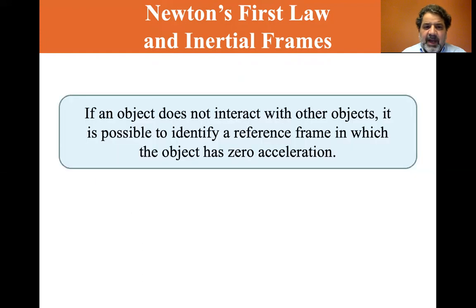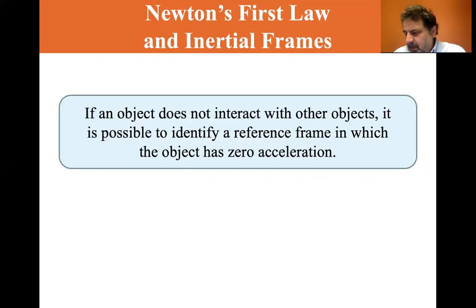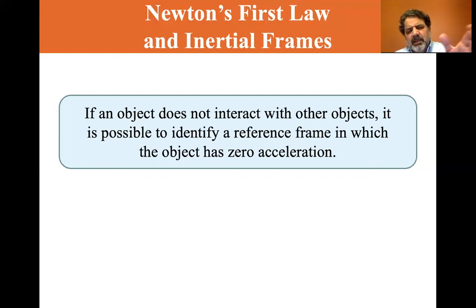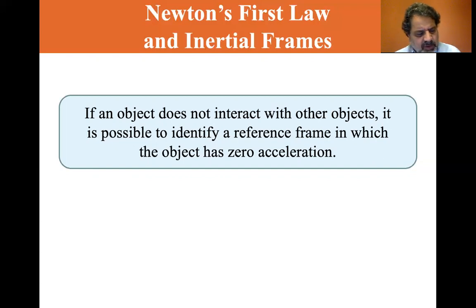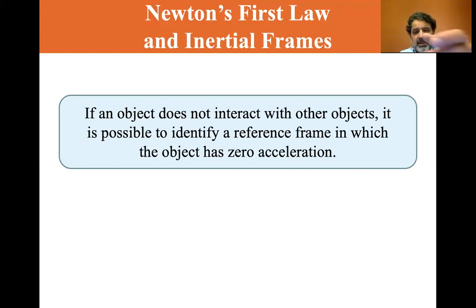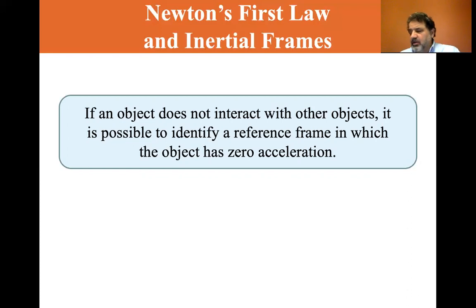So if an object does not interact with other objects, it is possible to identify a reference frame in which the object has zero acceleration. Even if the train has first taken off, you inside the train, as it accelerates, would see the puck suddenly go toward the back — you're not in an inertial reference frame. However, the person on the side, if he could look into the train, would see that the train is moving this way and the puck wants to stay put — he's in an inertial reference frame. Any reference frame that moves with constant velocity relative to an inertial frame is itself an inertial frame. So if the train is moving at constant velocity, it is indeed an inertial reference frame.